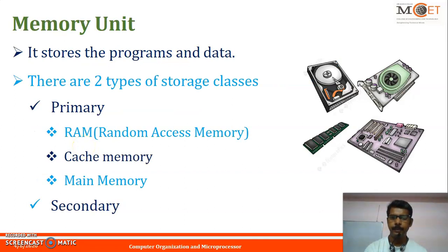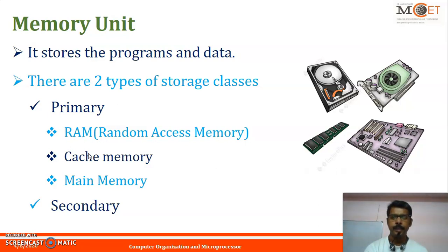The memory unit stores the program and data. There are basically two types of storage classes. Primary memory is fast memory that operates at electronic speeds; programs must be stored in memory while they are being executed. The memory contains a large number of semiconductor storage cells, each carrying one bit of information. Cells are processed in groups of fixed size called words. To provide easy access to any word, a distinct address is associated with each word location — addresses are numbers that identify successive locations, like house or door numbers. The number of bits in each word is called the word length.